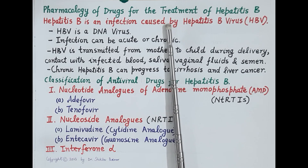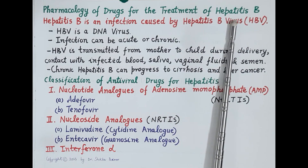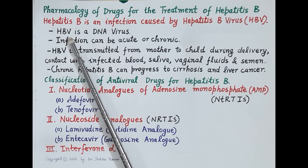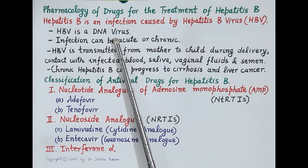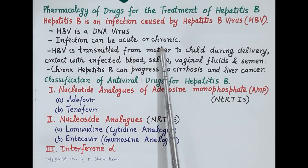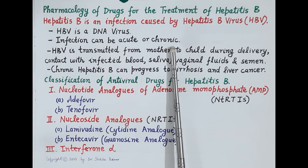In today's video we are going to study pharmacology of antiviral drugs used for the treatment of hepatitis B. Hepatitis B is a liver disease causing inflammation or swelling of the liver. It is a liver infection caused by hepatitis B virus (HBV), which is a DNA virus. Hepatitis B viral infection can be acute or chronic. If the infection persists for more than six months it is termed chronic hepatitis B, which is treated with antiviral drugs.